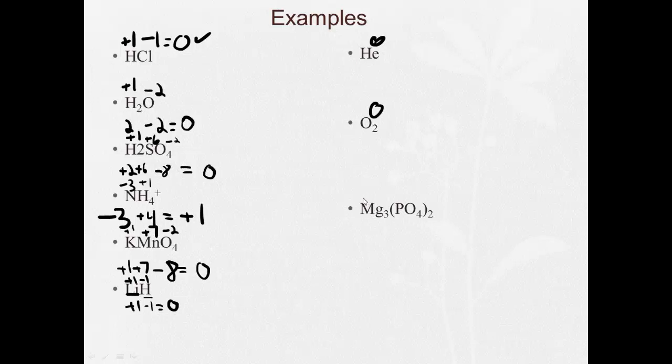Mg3(PO4)2. Alright, so magnesium is a group two. So each one is going to be plus two for a total of plus six. Each of these oxygens is going to be minus two. Minus two, now there's four times two, there's eight oxygens. So we end up with minus sixteen. The whole thing has to be equal to zero. So all the phosphoruses together have to be plus ten.